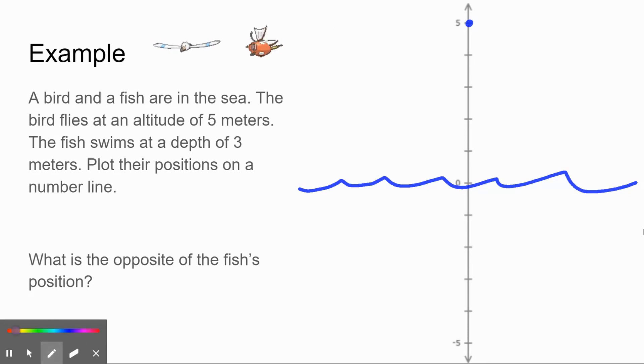The fish, on the other hand, is down at a depth of three meters. You might be tempted to put it at three, but since it's at a depth, it's under the water, right? So our fish is actually going to be right here. That's all you need to do for plotting things on a number line.